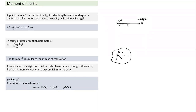Moment of inertia is a scalar quantity — for multiple point masses we sum all m·r² terms. It always depends on the axis of rotation; the same object may have different moments of inertia for different axes. For continuous mass, we divide into small pieces: dm·r², where dm equals lambda·dx for linear mass, sigma·dA for planar mass, or rho·dV for three-dimensional objects.